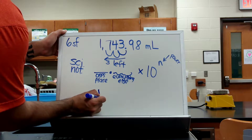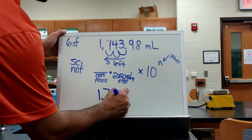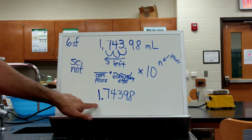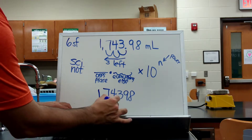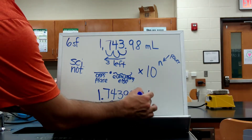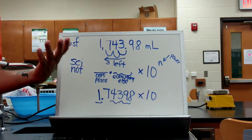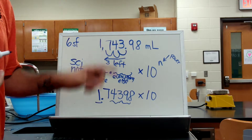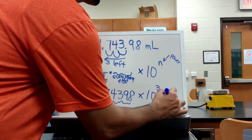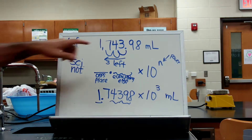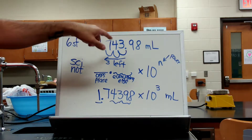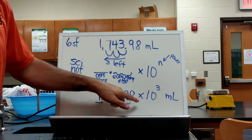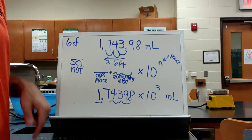Because if I do that, I move this decimal place over three spaces to the left, making a ones place out of my number. So I'll have 1.74398. This is the ones place, and this is everything else. I need that times ten to the — how many times did I move the decimal point to the left? Three times, so my exponent is going to be positive three: times ten to the third milliliter. So if I want to express 1,743.98 milliliters in scientific notation, I would write 1.74398 times ten to the third milliliters.